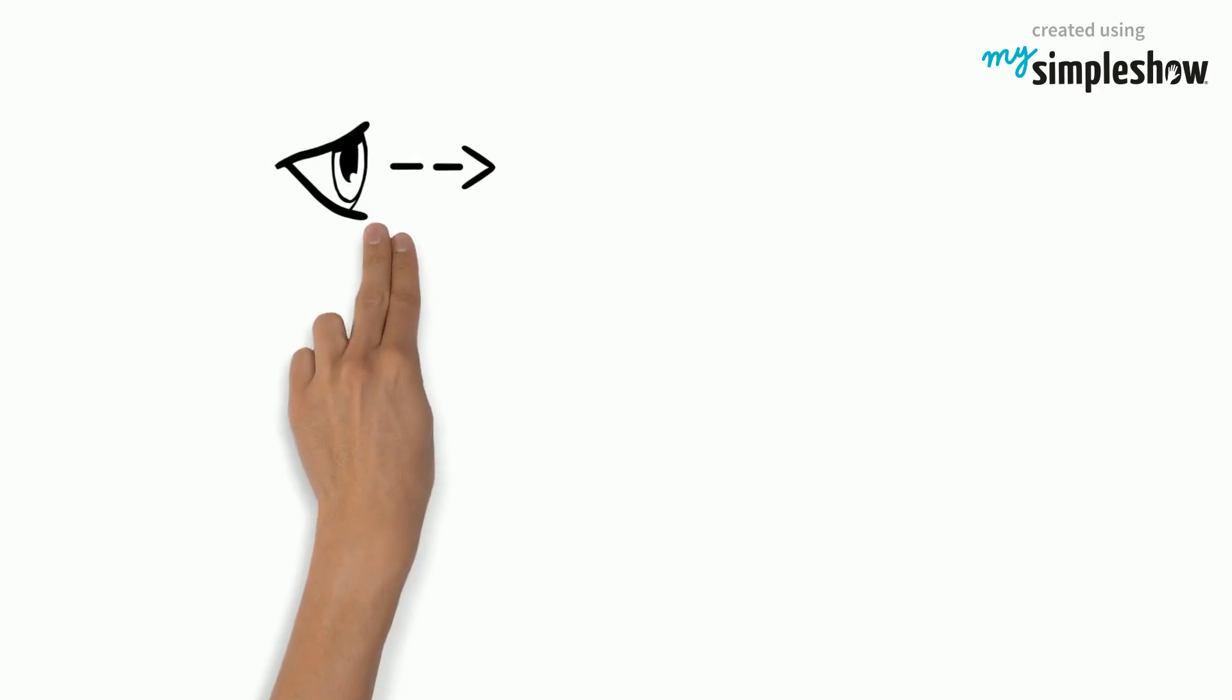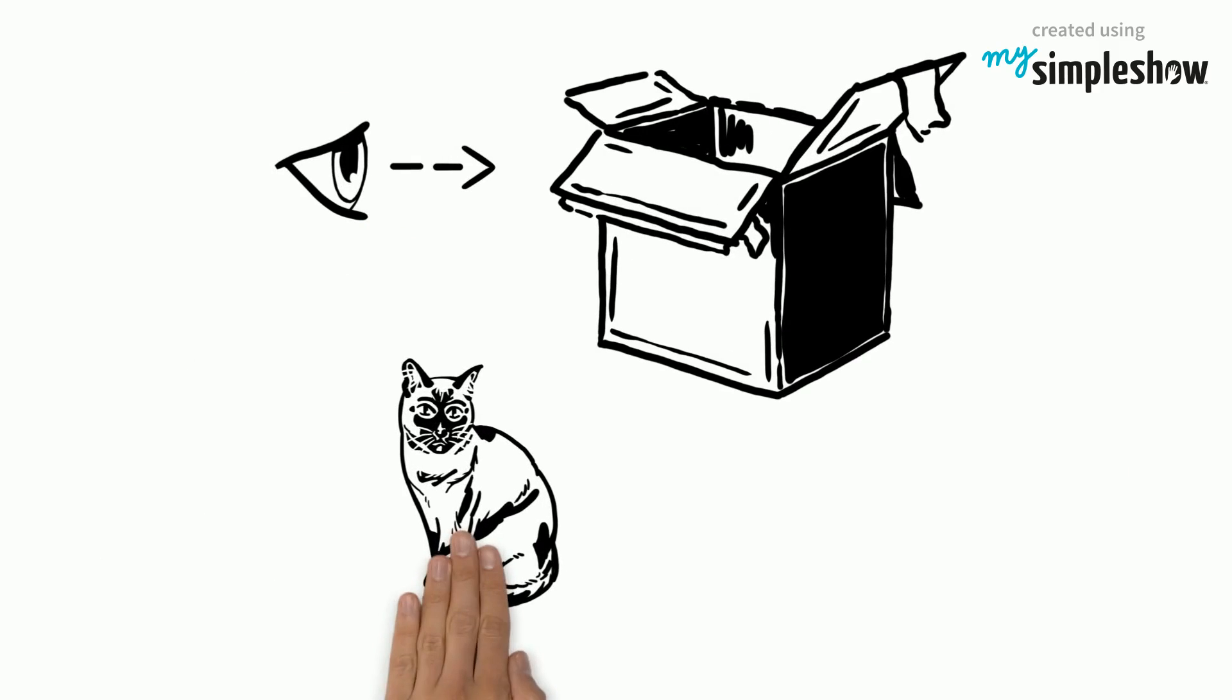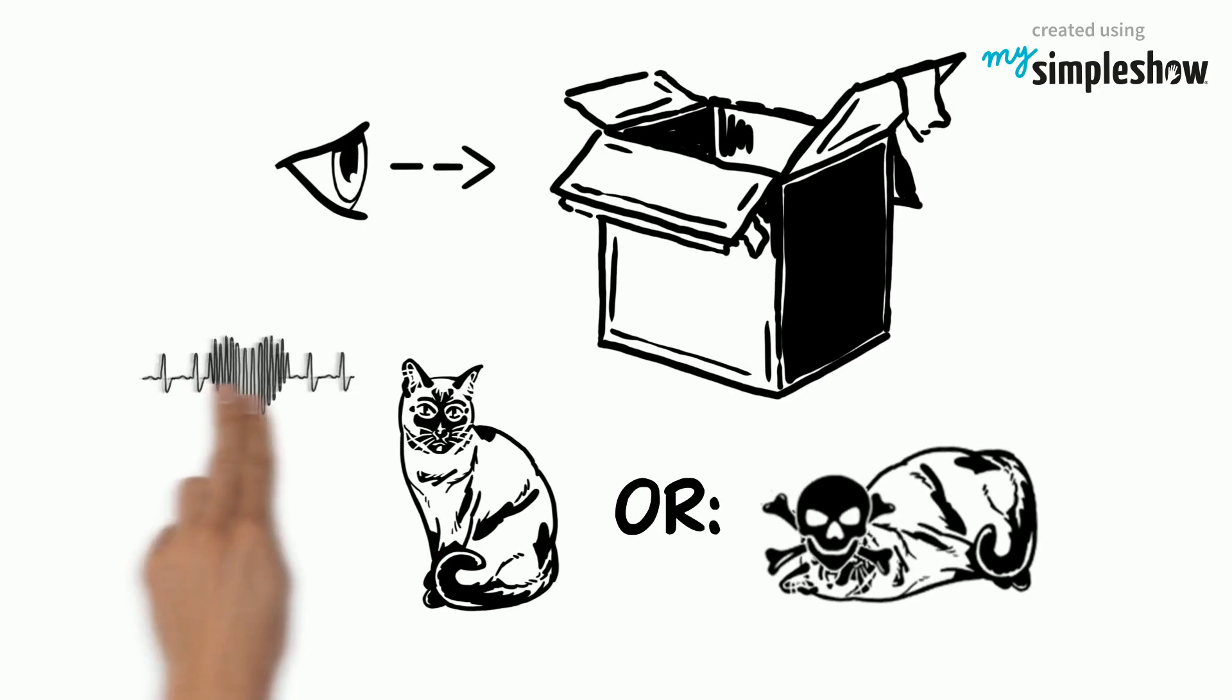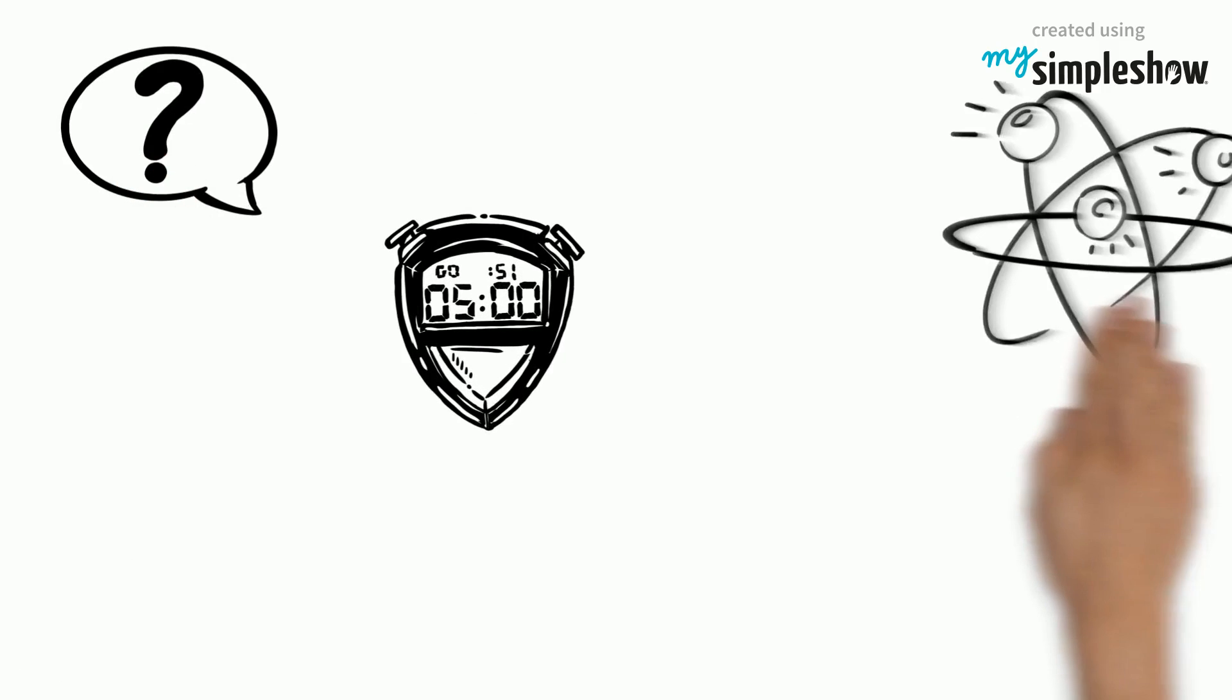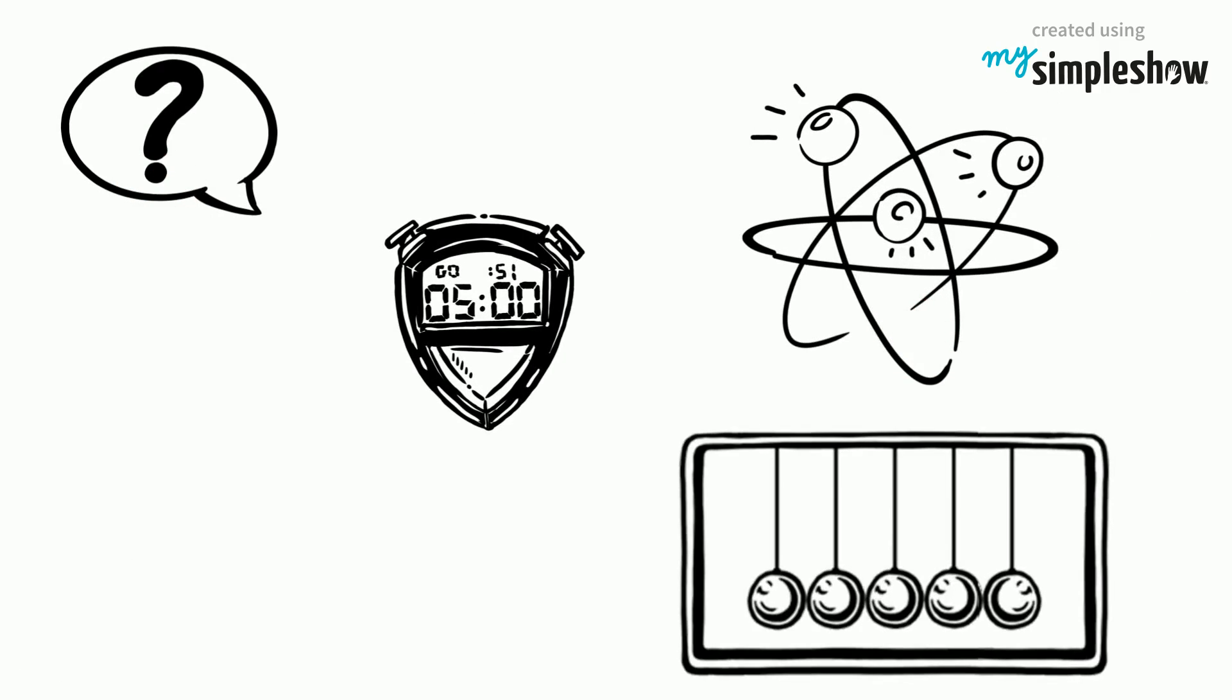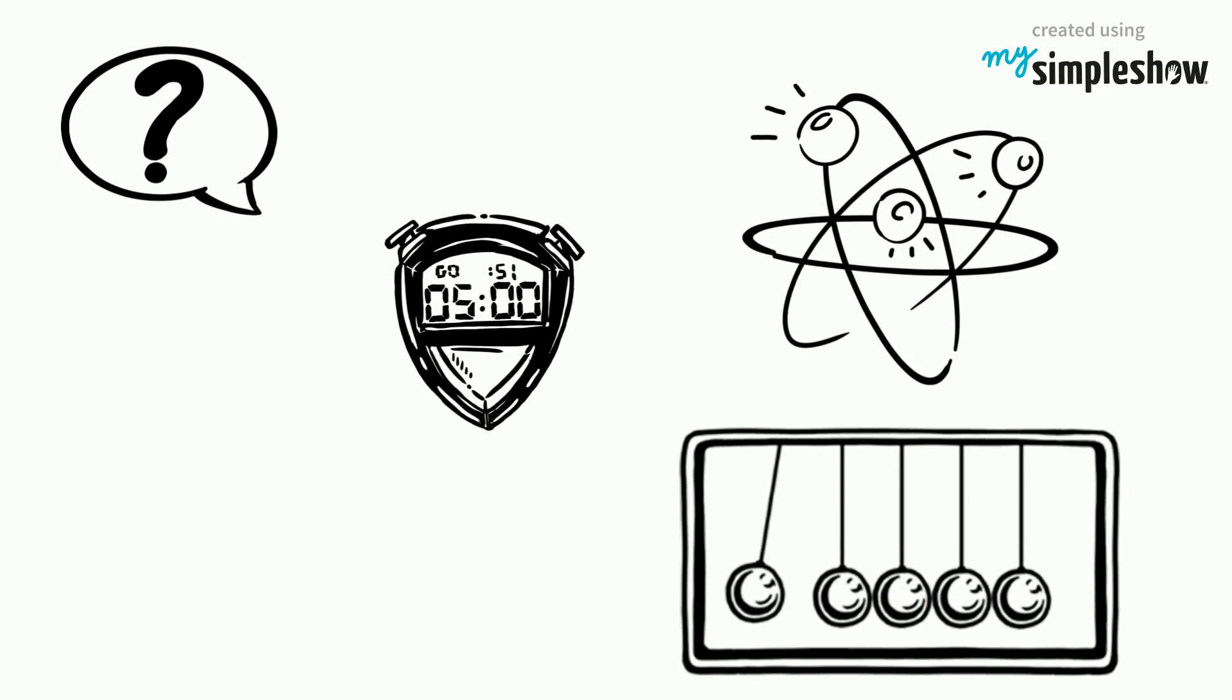Yet, when one looks in the box, one sees the cat either alive or dead, not both alive and dead. This poses the question of when exactly quantum superposition ends and reality collapses into one possibility or the other.